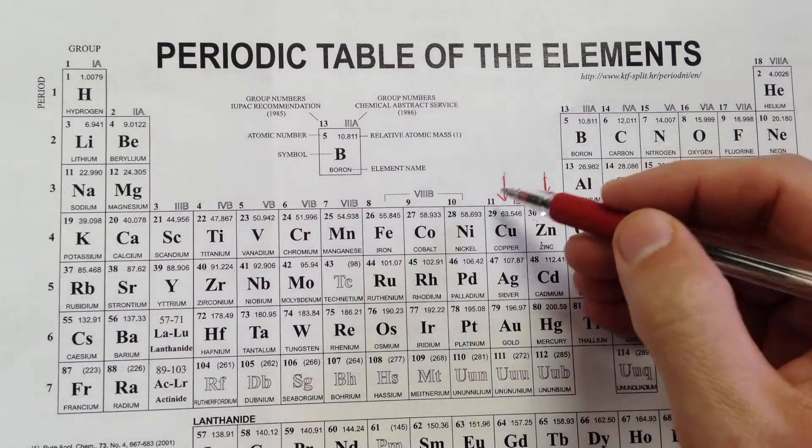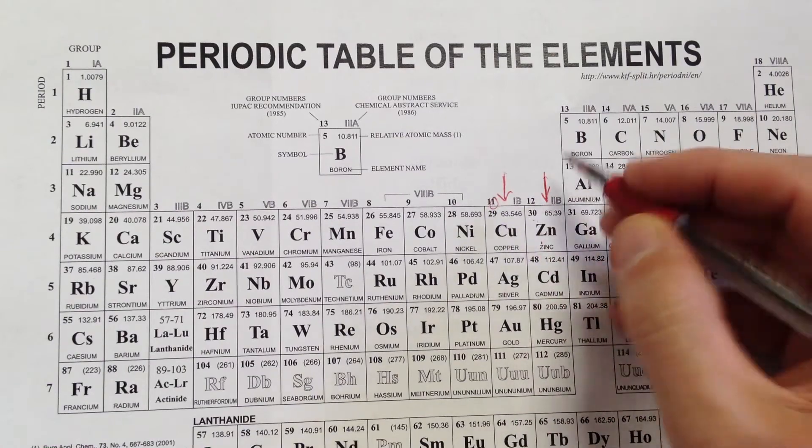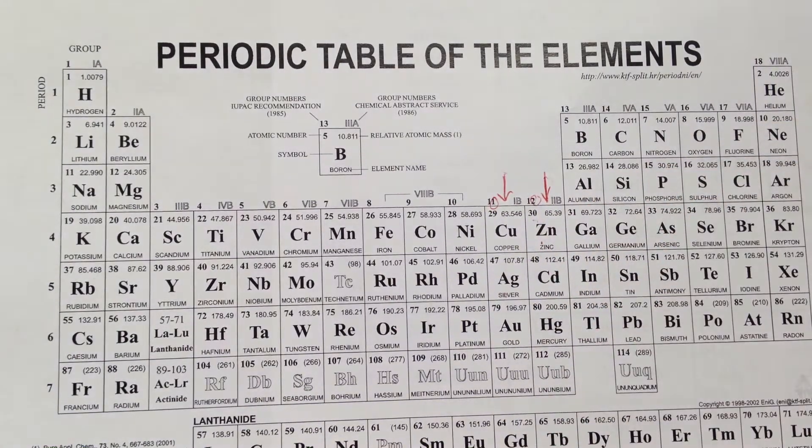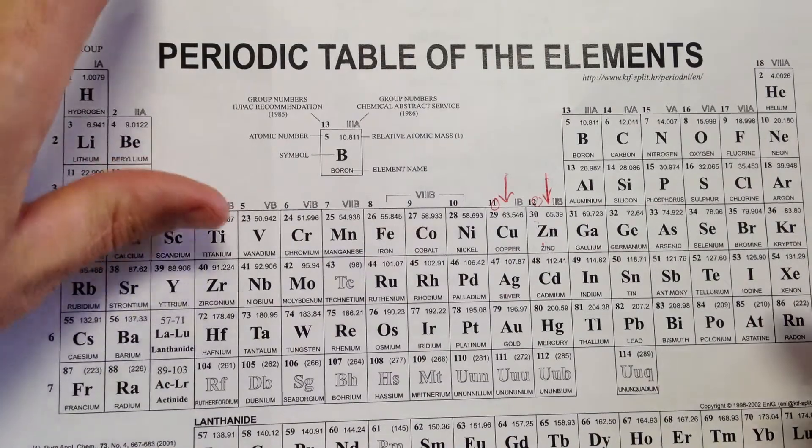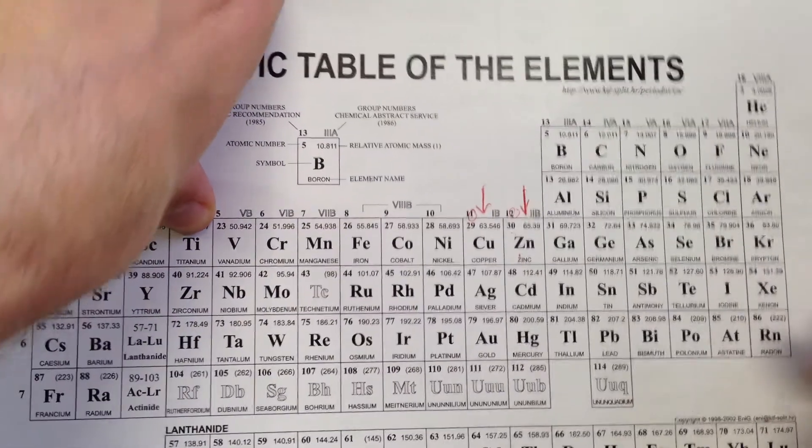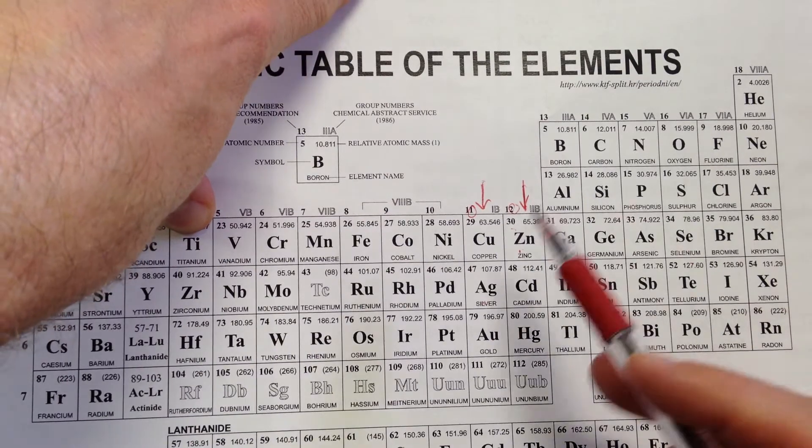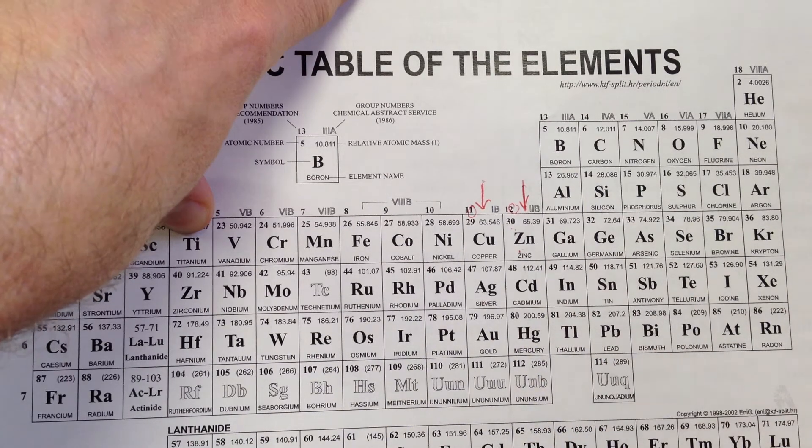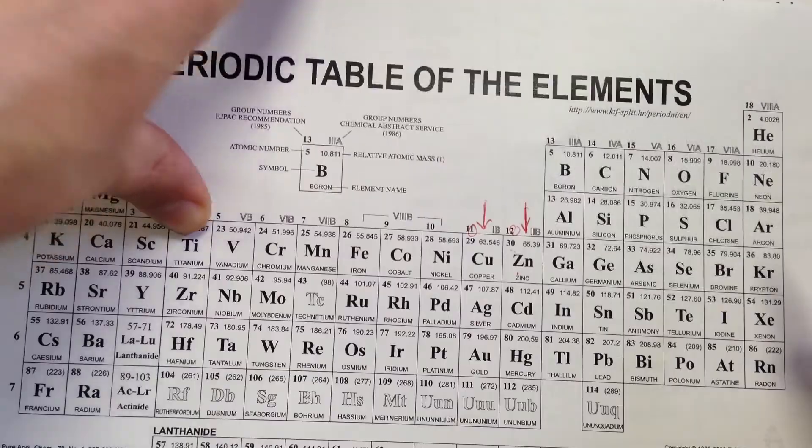A different thing that some kids do is they say 11 and 12, 1 and 2, the numbers of those groups. So you can remember it that way if that's better for you. But however you do it, there's no trick for that. It's not like these things are always plus one or plus two. You just got to memorize those.